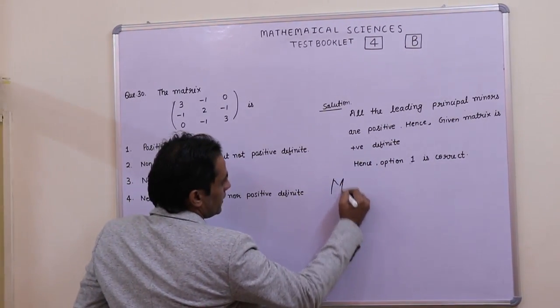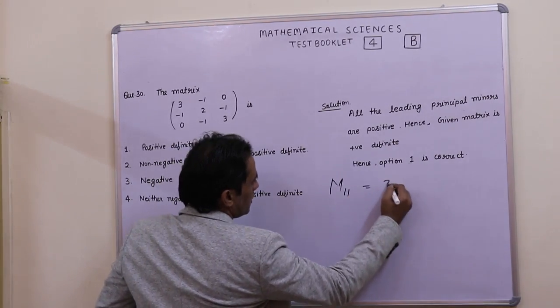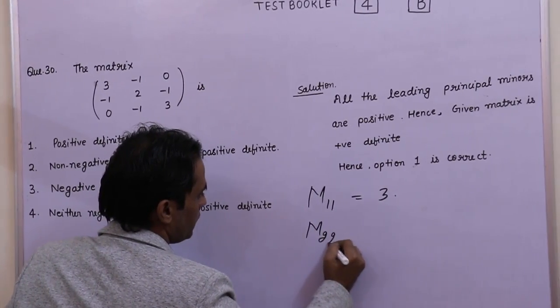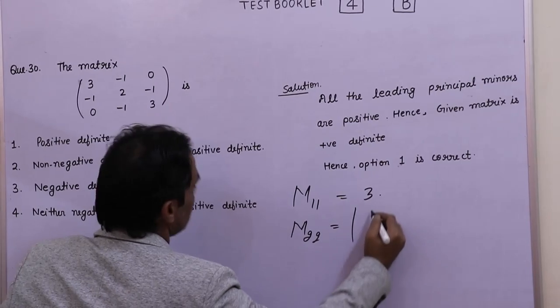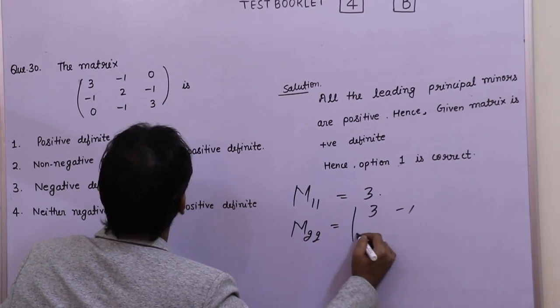The first principal minor is M11 which is 3. The second principal minor is M22 which is the determinant of 3, -1, -1, 2.